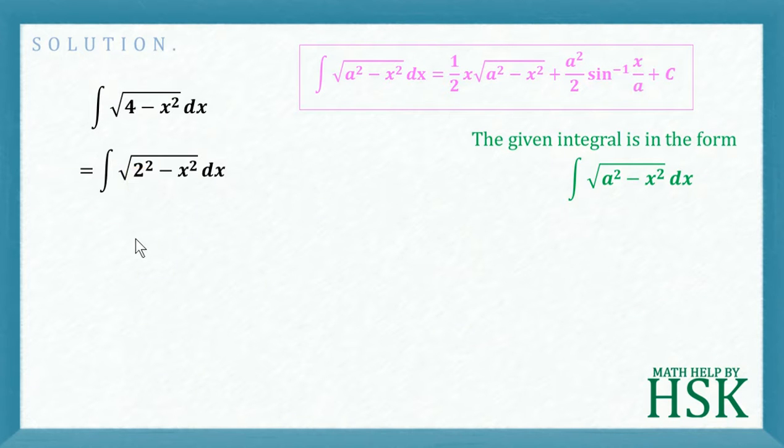Okay, so I'm going to get this as 1 by 2 x square root of 2 squared minus x squared, plus 2 squared upon 2 into sine inverse of x upon 2 plus c.